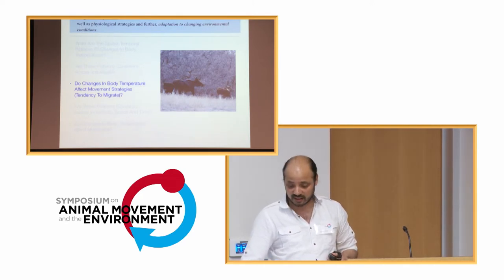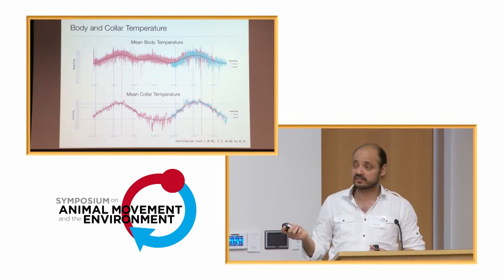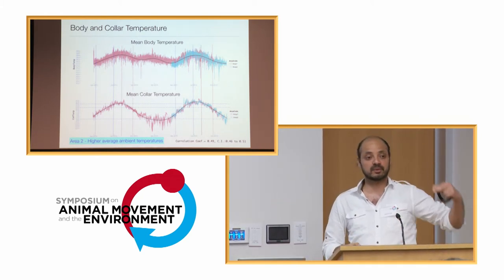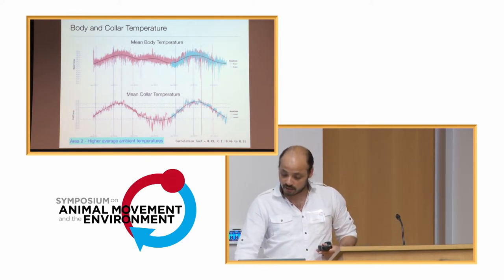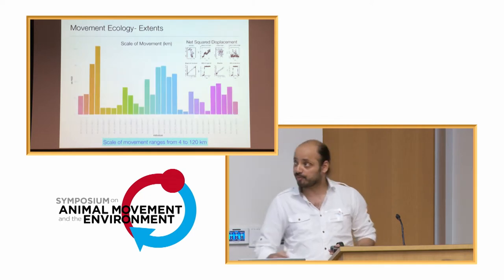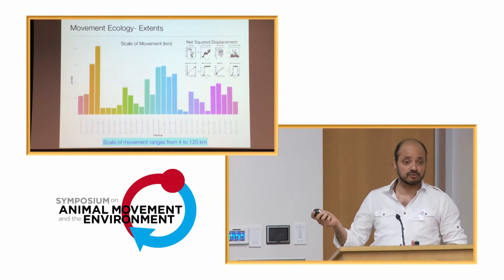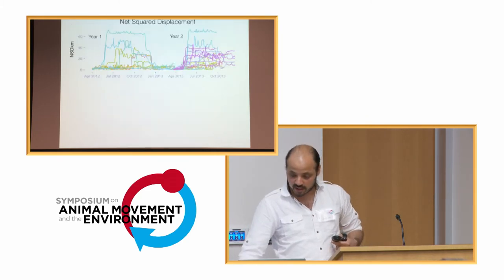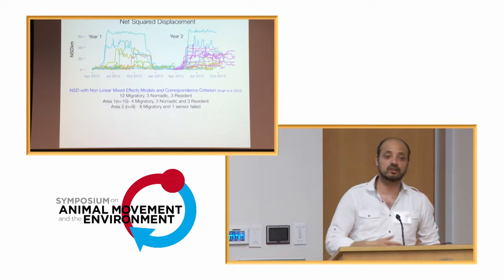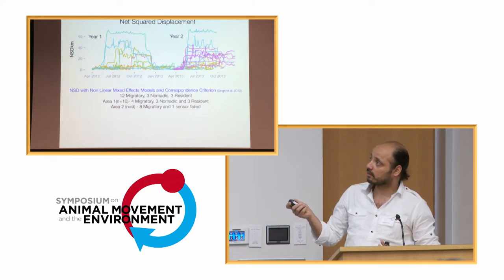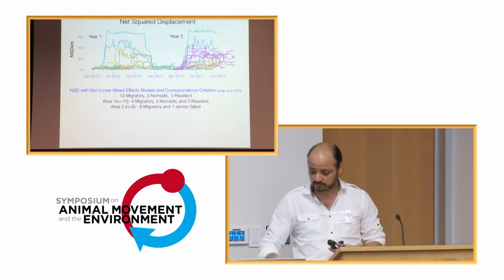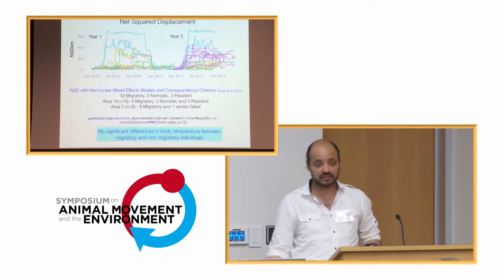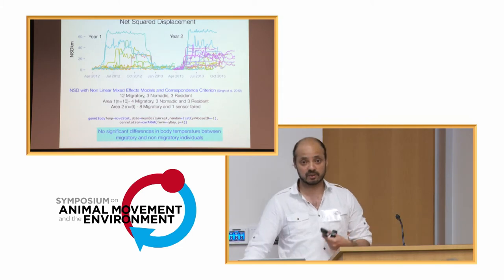Do these changes affect the tendency to migrate? We looked at collar temperature measured simultaneously. Area two had higher ambient temperatures on average but lower moose body temperatures. Looking at movement extents, there was large variation — ranging from 4 kilometers to 120 kilometers throughout the year. Using net square displacement patterns to identify migratory versus nomadic individuals: 12 were migratory in one area, with most migratory in area one, and a mix in area two. However, there were no significant differences in body temperature between migrants and residents.